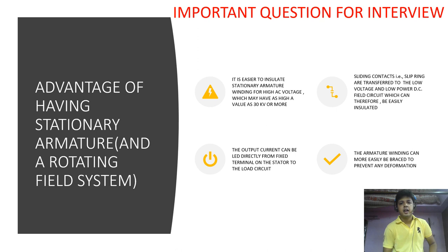So it is easier to insulate the stationary armature winding for AC voltage which may have as high as value like 30 kV or more. Second, in the sliding contact, if we put the armature on the rotor then we have to use sliding contact like slip ring from high voltage side. But if we put the rotor field contact then we have to give only 120 volt, 125 volt. So slip rings are transferred to the low voltage side and the low power DC field winding which can be therefore easily insulated.